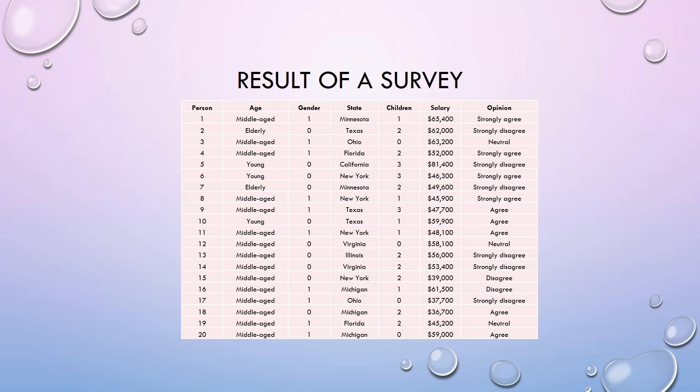The second variable is age, which has three categories: young, middle age, and elderly. So this variable is ordinal data with three categories.